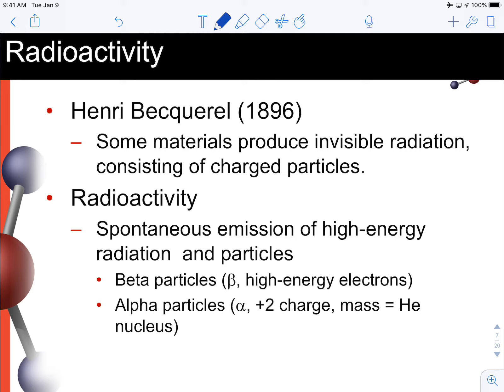And some of the radioactivity that we see produced are things like beta particles and alpha particles. There are only two types of the many types of radiation and particles that can be produced. Gamma radiation is another one. That is actually electromagnetic radiation where these two are actually particles.